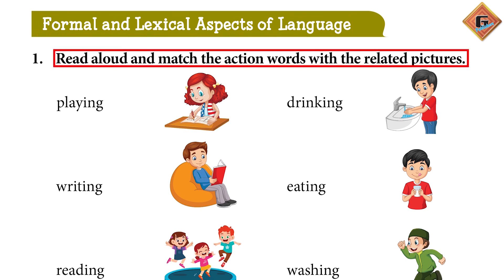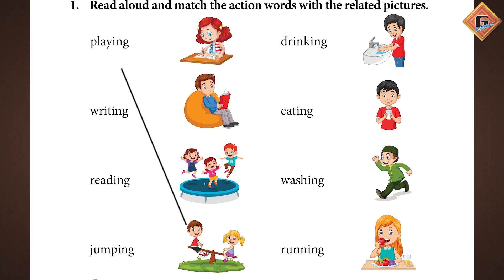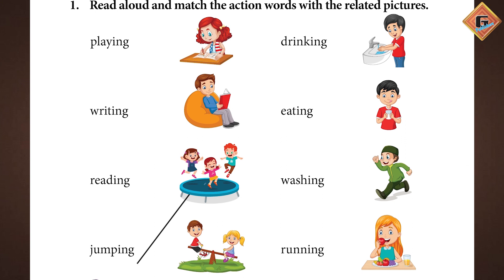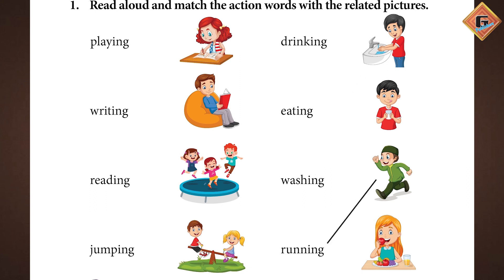Formal and lexical aspect of a language. Read aloud and match the action word with the related picture. Jaisa ki aap ko screen peh nazar aa raha hai: ek picture hai — playing. Playing ko aap dekhe hai, to playing peh basically yaha last picture hai jahan par bacha play kar raha hai. Writing — first picture ke saath screen peh dekhe match ho raha hai. Reading — jahaan ye bacha ek read kar raha hai. Jumping — jahaan ye teen bache jump kar rahe hain. Drinking — ye bacha drink kar raha hai. Eating — ye bacha khaana kar raha hai. Washing — the very first picture. Aur running — aap ke paas second column ki second last picture hai.